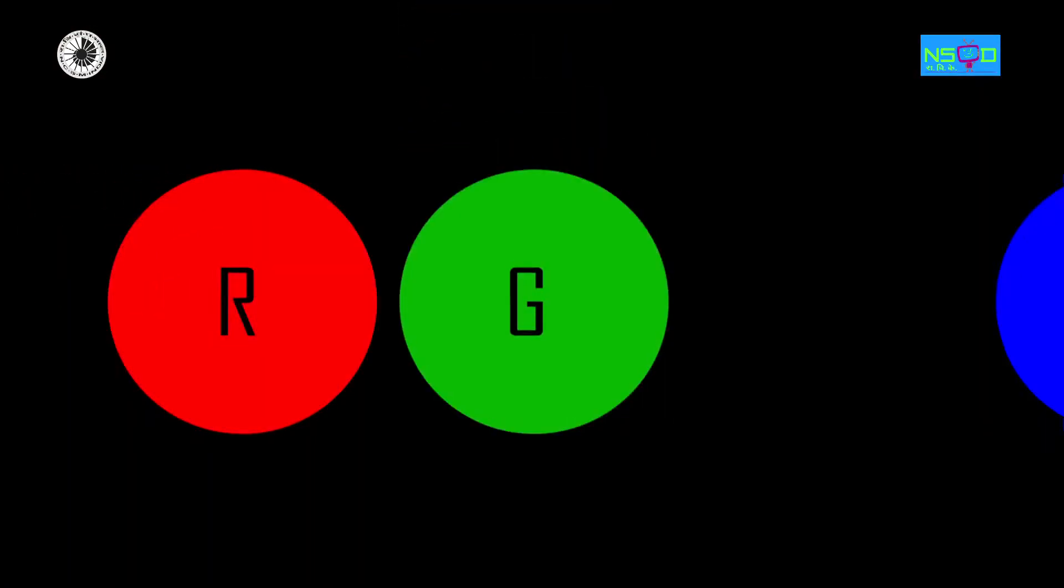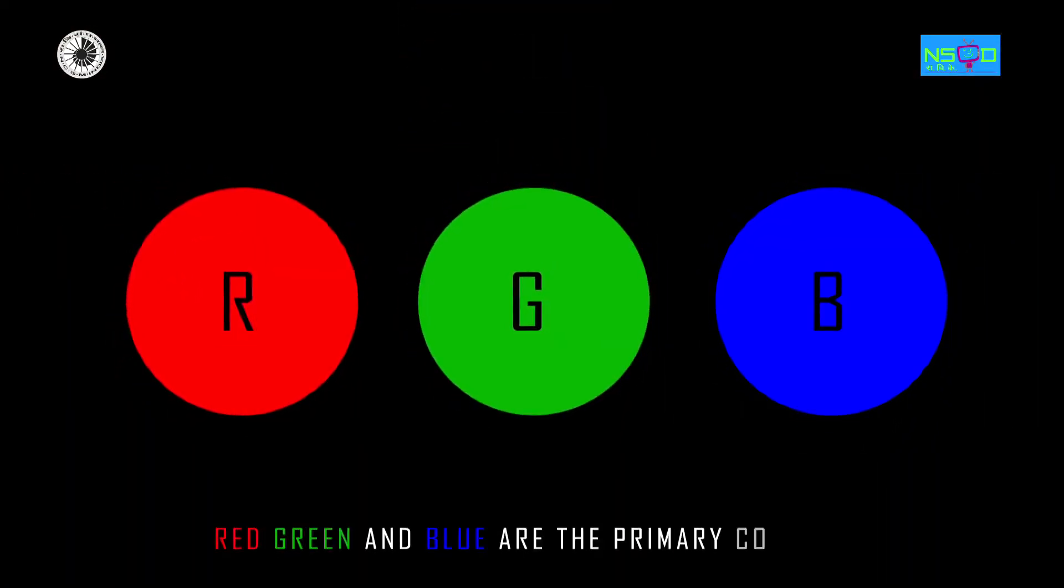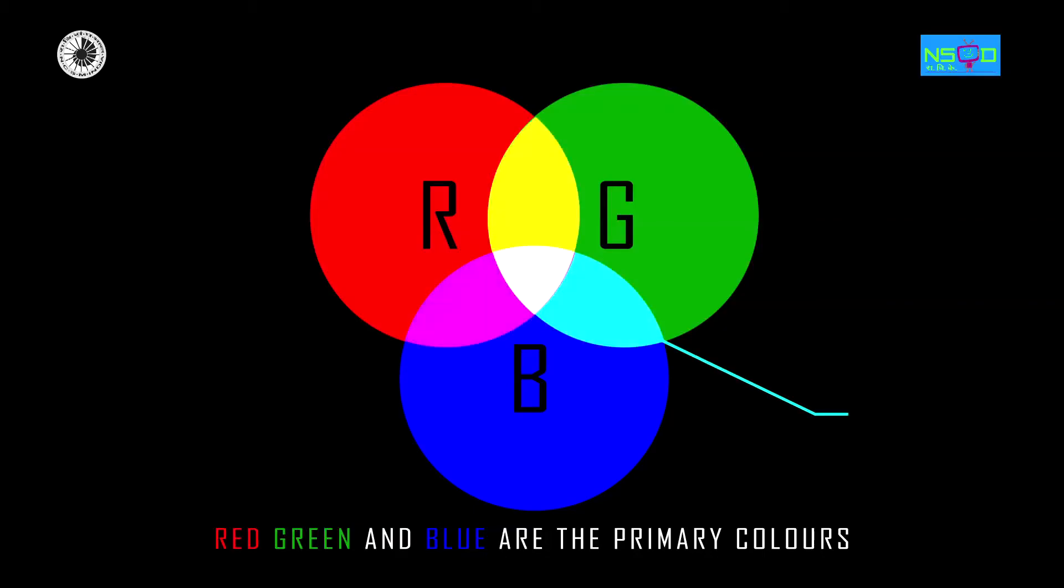Red, green and blue are the primary colors of light also known as additive primaries. They can be combined in different proportions to make all other colors.